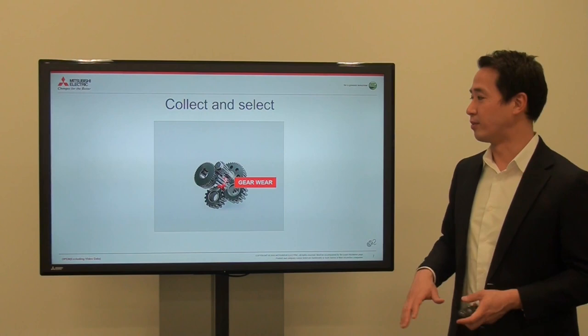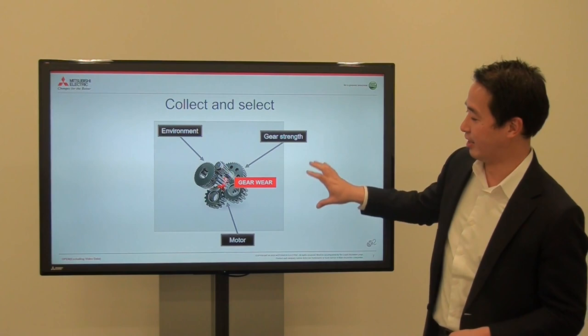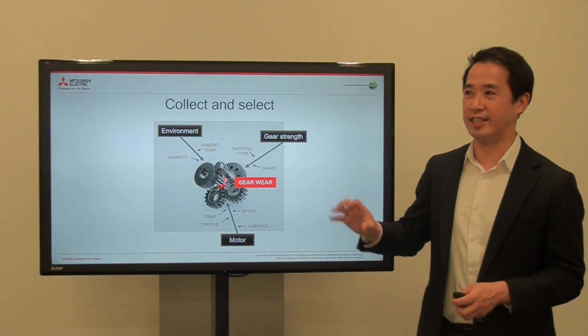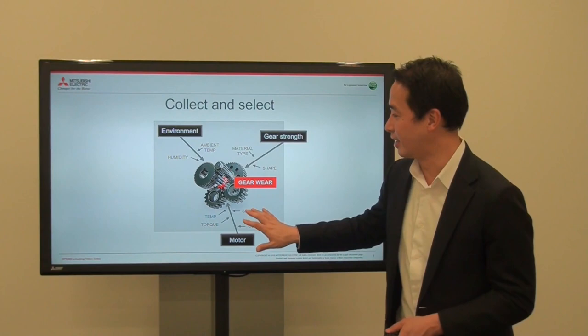The first step is to collect and select the data you have. We don't know the gear wear status directly, but we know a lot of different data: we know the environment data, the gear strength data, and the electrical characteristics of the motor. More specifically, we know humidity, ambient temperature, material type, the shape of the gear, and also motor data including current, speed, and temperature.